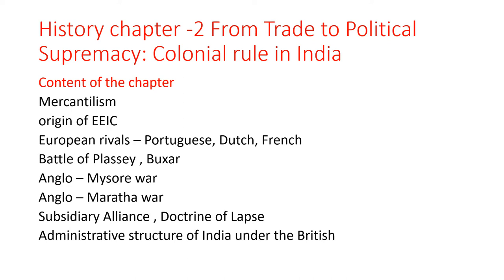The name of the chapter is 'From Trade to Political Supremacy: Colonial Rule in India.' In this chapter we are going to learn about Mercantilism, origin of the East India Company, European Rivals — four important European countries: English, Portuguese, Dutch and French — Battle of Plassey and Buxar, Anglo-Mysore War, Anglo-Maratha War, Subsidiary Alliance, Doctrine of Lapse, and the Administrative Structure of India under British rule. Let us see one by one.